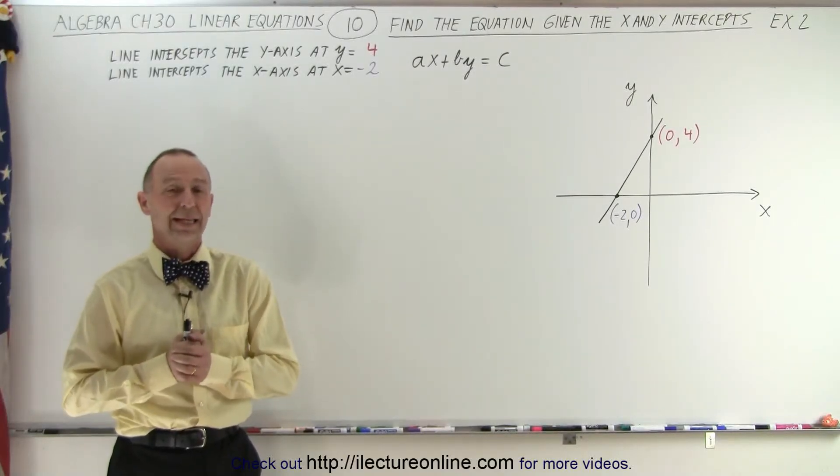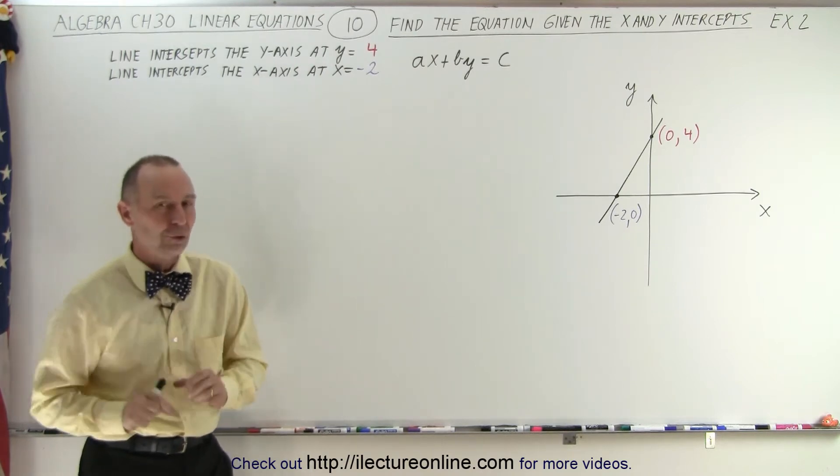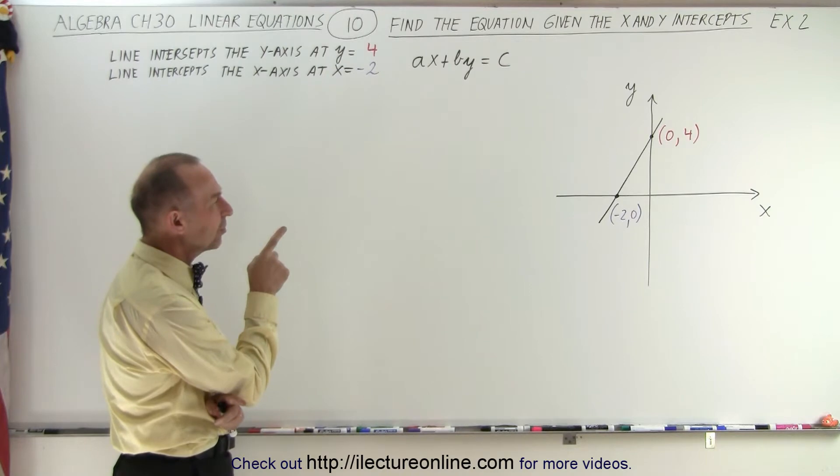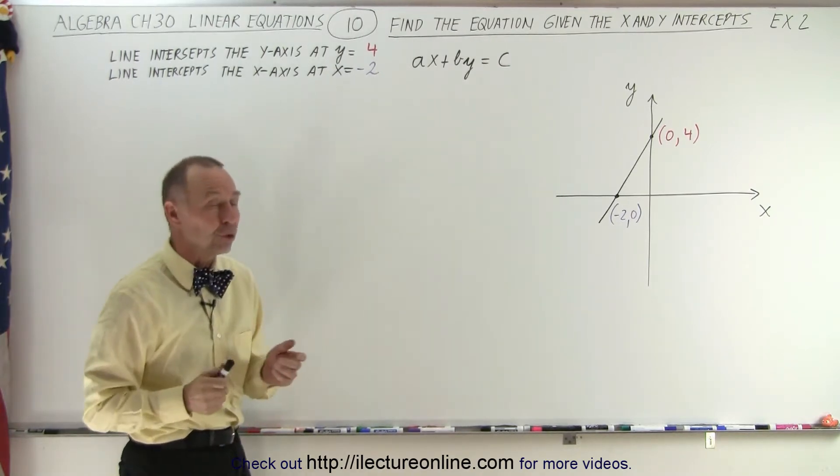Welcome to our lecture online. Here's a second example of how to find the equation of a line given the two intercepts. So we cross the y-axis at y equals 4, we cross the x-axis at x equals negative 2.